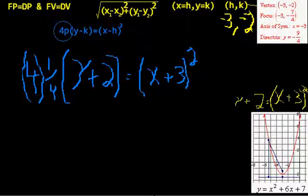What you've got is the focus and the vertex, I'm sorry, the focus and the directrix, is just plus or minus that P, whatever 4 times is that.